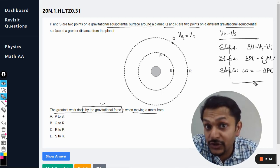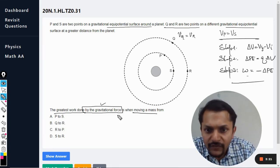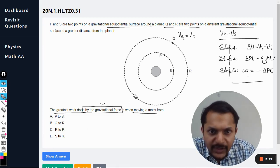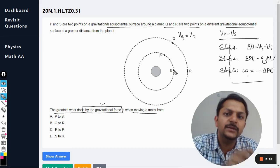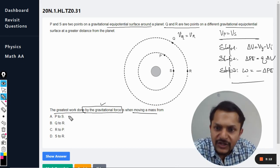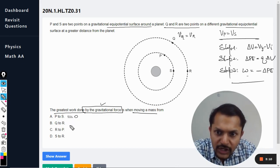So work done is this. Now when they talk about work done from P to S, the potential is same, so there is no question of doing work when the point is moving on one equipotential surface. So the work done here is zero. Q to R is also zero.